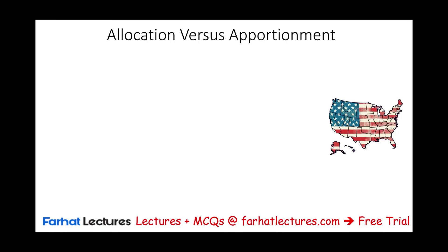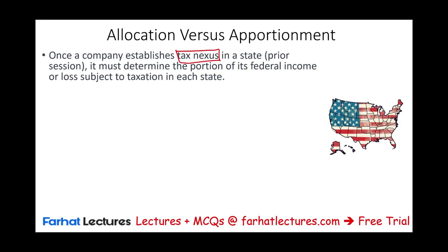Hello and welcome to this session in which we will discuss the concept of allocation and apportionment when it comes to state income taxes. Once a company establishes a tax nexus in a particular state — tax nexus means a tax connection between the company and a particular state — the next thing we have to do is determine the portion of the federal income or loss subject to taxation in that particular state.